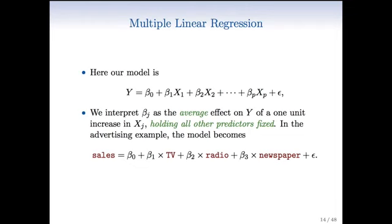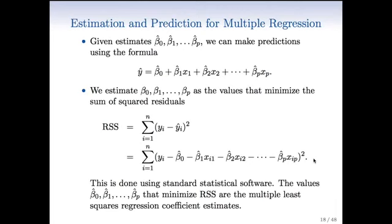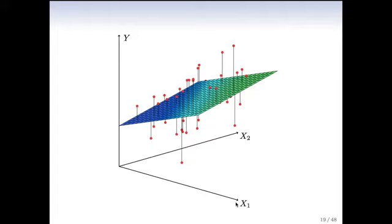Let's actually flip ahead to slide 19 for a moment. I have a picture of this. Whereas before we had a line, now it's a hyperplane. I've been able to draw it here just for two predictors. It's hard to draw it for three. But now the line is replaced by this flat surface called a plane or hyperplane.